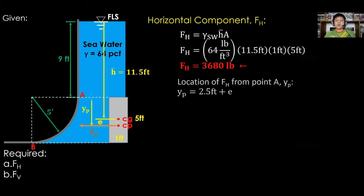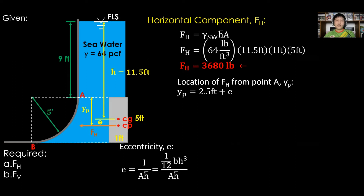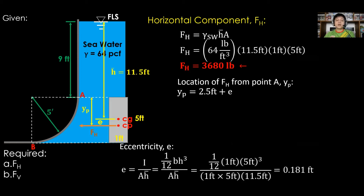Next is the location from point A. You may consider any point for the location. For this sample, Y sub P is equal to 2.5 feet plus E, measured from point A. For eccentricity E, E is equal to I — that is, (1/12) times B times H cubed — over the product of A and h-bar. Substituting B as 1 foot, H as 5 feet, and h-bar as 11.5 feet, E is equal to 0.181 foot. Substituting into Y sub P, the location from point A is 2.681 feet.